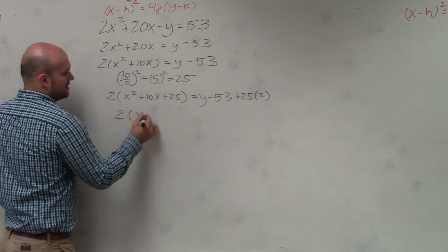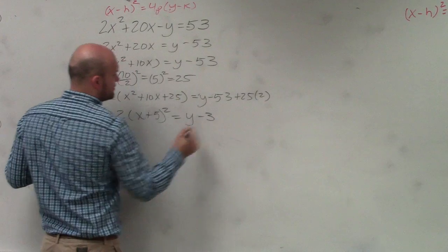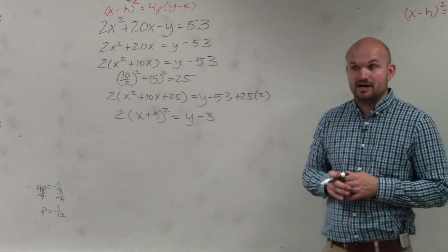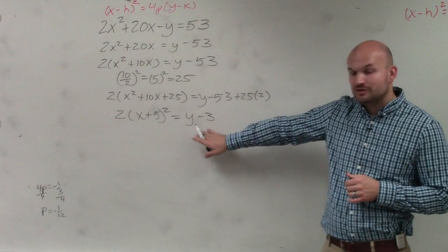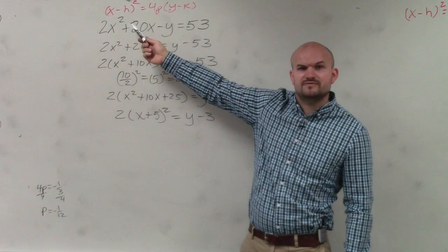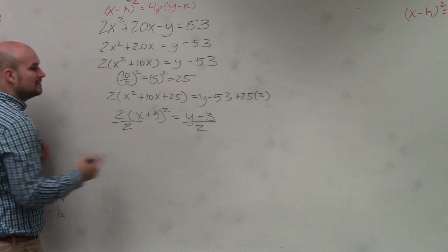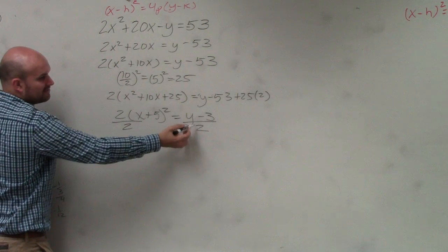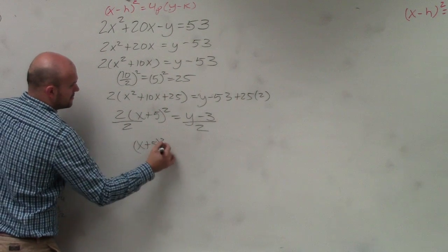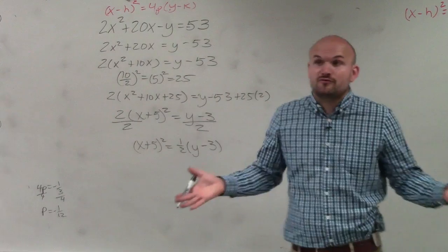Then I complete the square. So this becomes 2 times x plus 5 squared equals y. 25 times 2 is 50. That's equal to y minus 3. Now, again, be careful. When you guys look at this problem, Tyler, do we want a coefficient in front of our x squared side? No. So what we need to do is divide by 2 on both sides. Please understand, therefore, dividing by 2 is the same thing as multiplying by 1 half, correct? You guys agree with me on that? So therefore, I can write it like this.